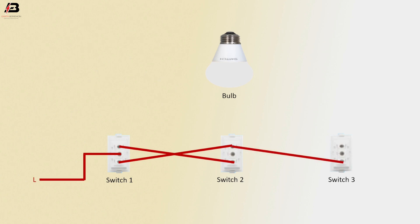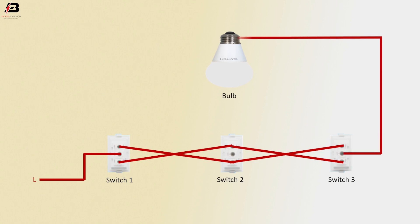Again, another connection to Switch 2 and Switch 3. And Switch 2 and Switch 3, L1 and L2 terminal cross connection. Output connection from Switch 3 common terminal to connect bulb. Switch 2 and Switch 3 common connection.